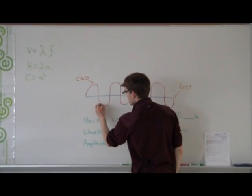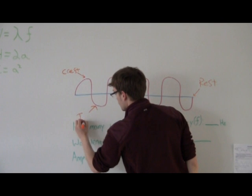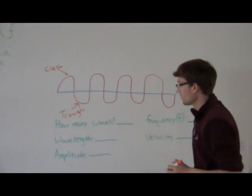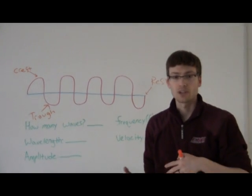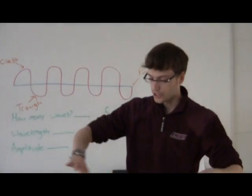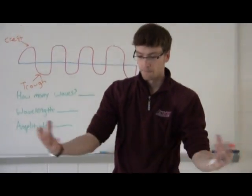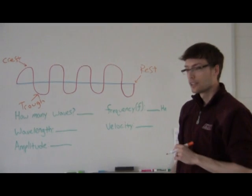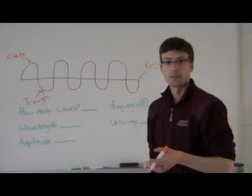Next is the trough. This is called a trough because it looks like a cross section of a trough that a horse would drink water out of or pigs would eat slop out of. They're usually long and they're shaped like this if you cut them in half and you look down it. It holds the water or the slop or whatever it is.